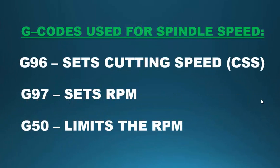Welcome back to part 7 of CNC lathe programming. In this lesson I'd like to talk about constant surface speed used on the CNC lathe. I'm going to introduce three new G-codes: G96 which sets the cutting speed, G97 which sets RPM, and G50 which limits the RPM that your CNC will turn.